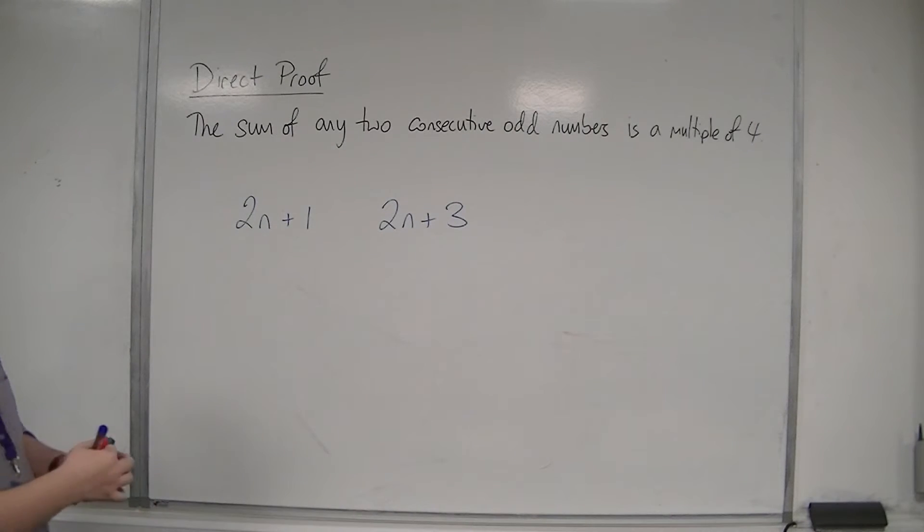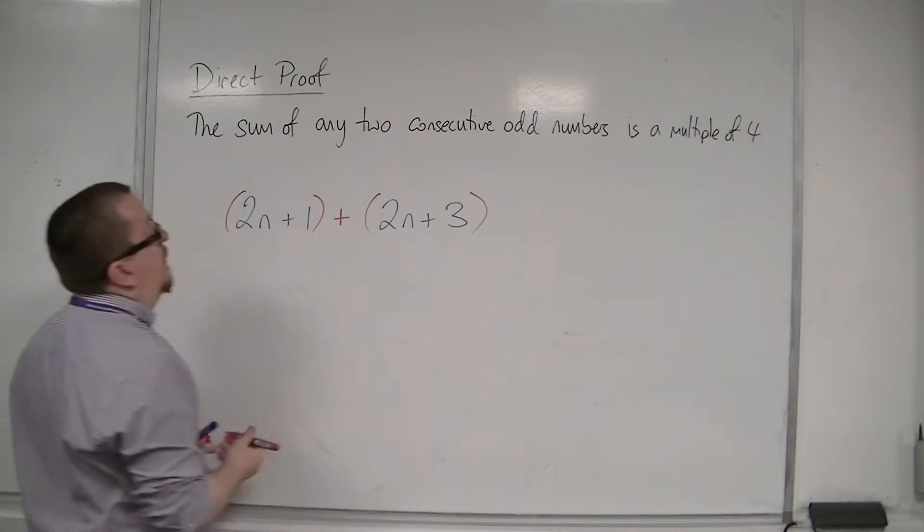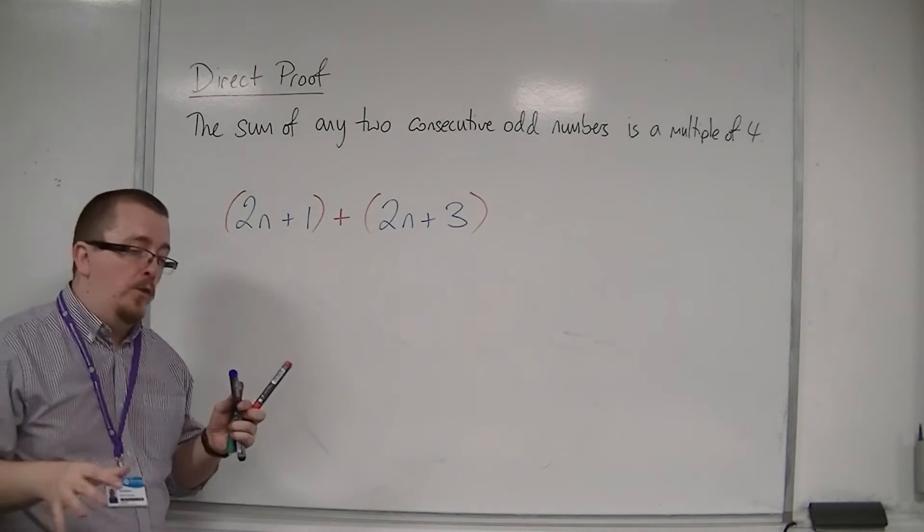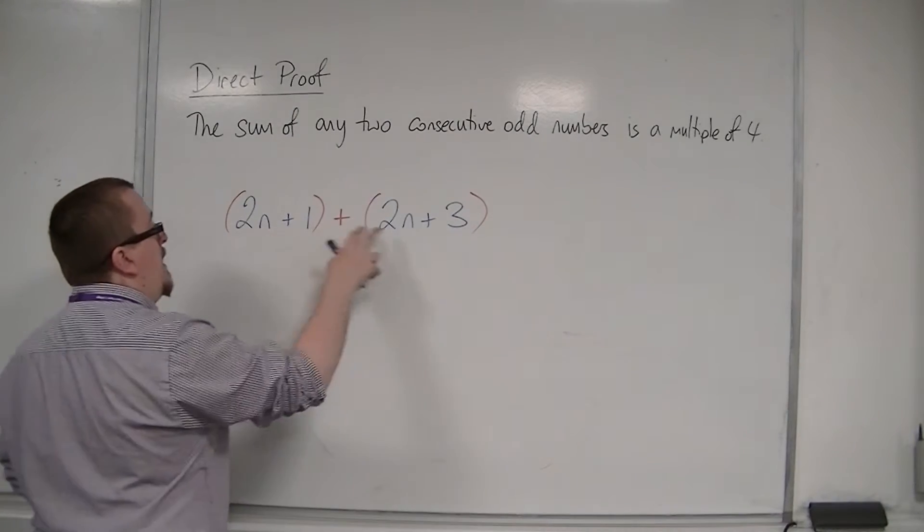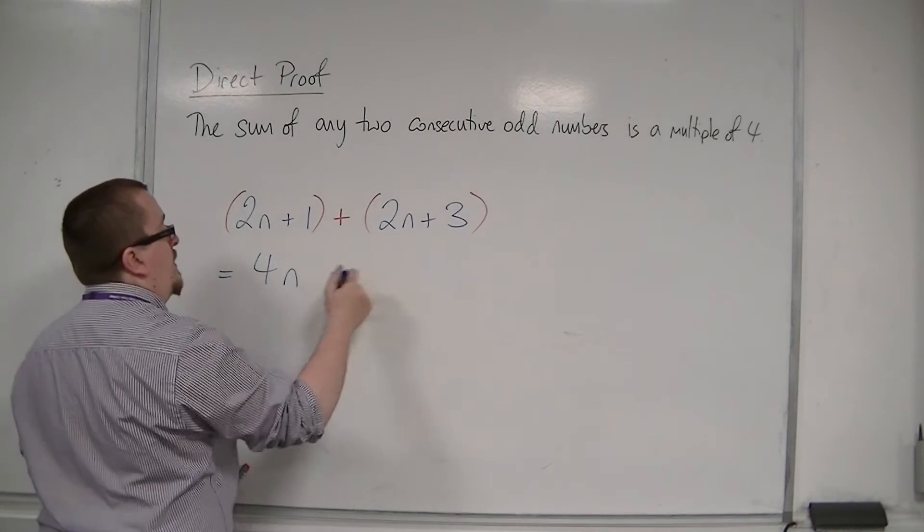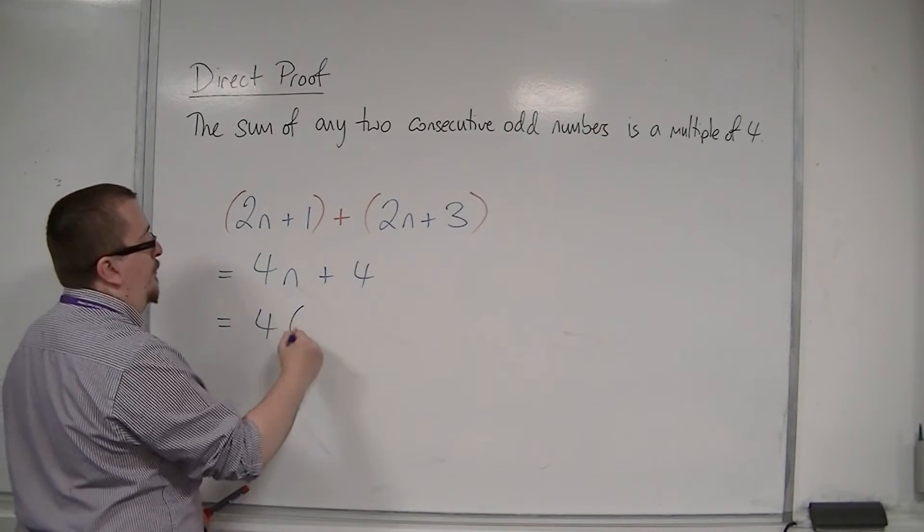So the sum, the addition of these two, we want to show that this is a multiple of 4. Well, we've got 2n plus 2n is 4n, 1 plus 3 is 4. And we can factor out 4 from that.